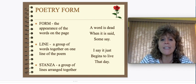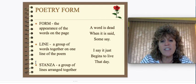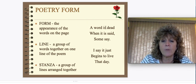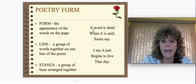A line is exactly what it says — the lines in a poem are a group of words together on one line. For example, this poem has six lines: one, two, three, four, five, six.